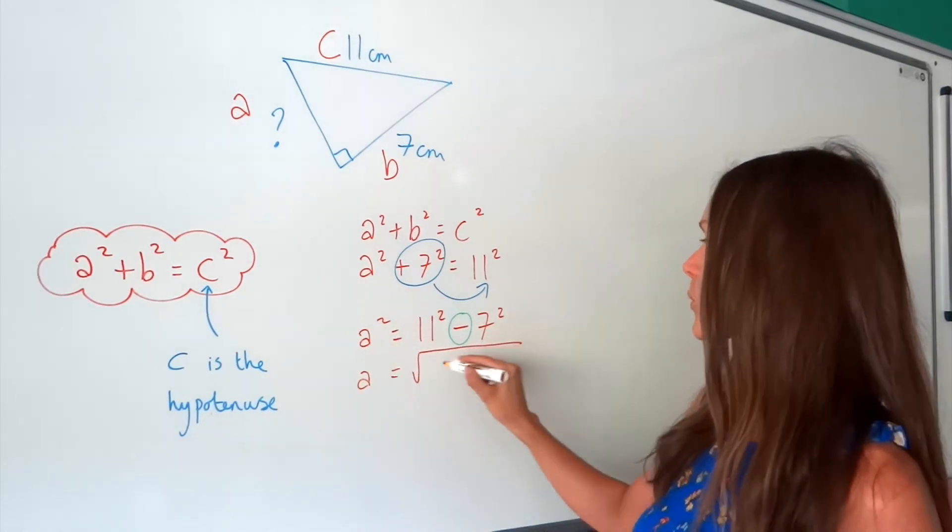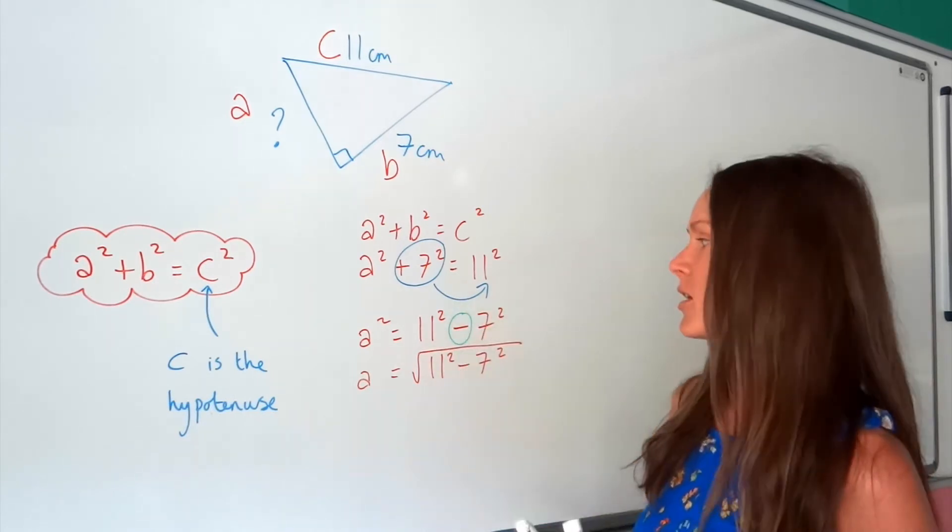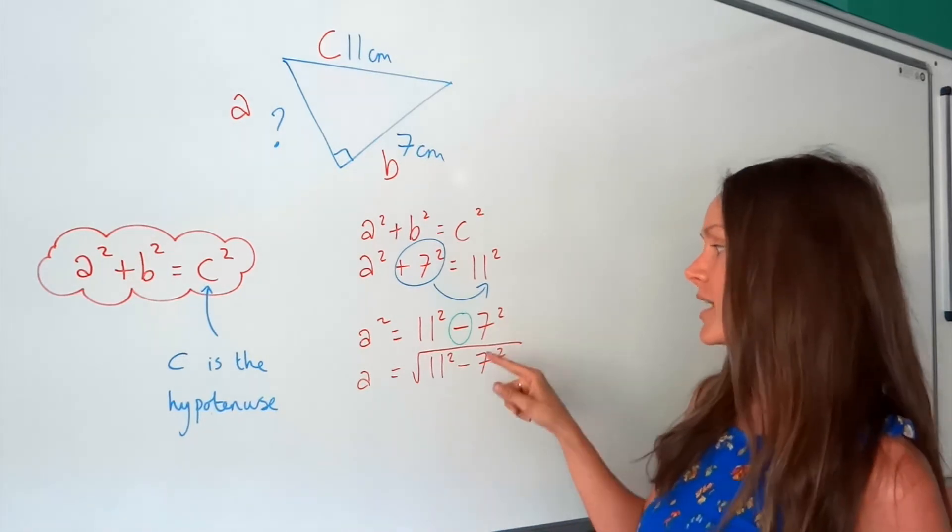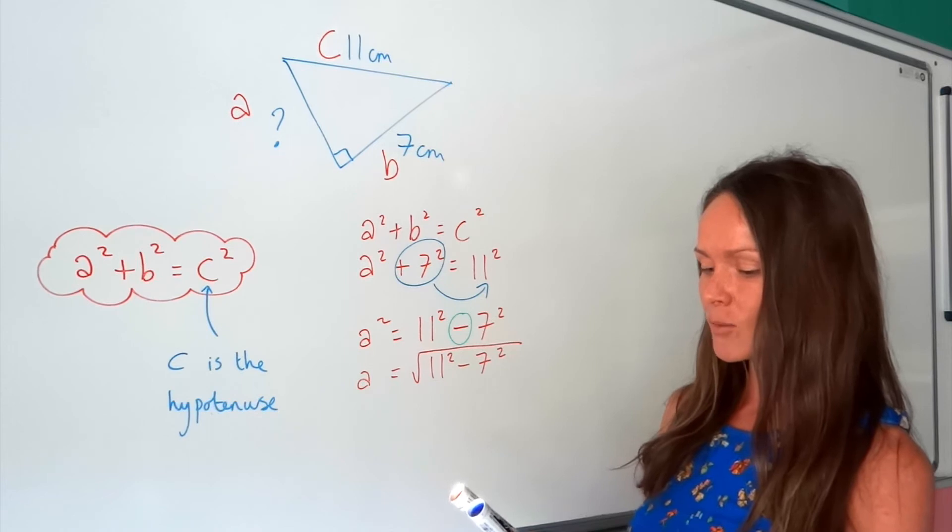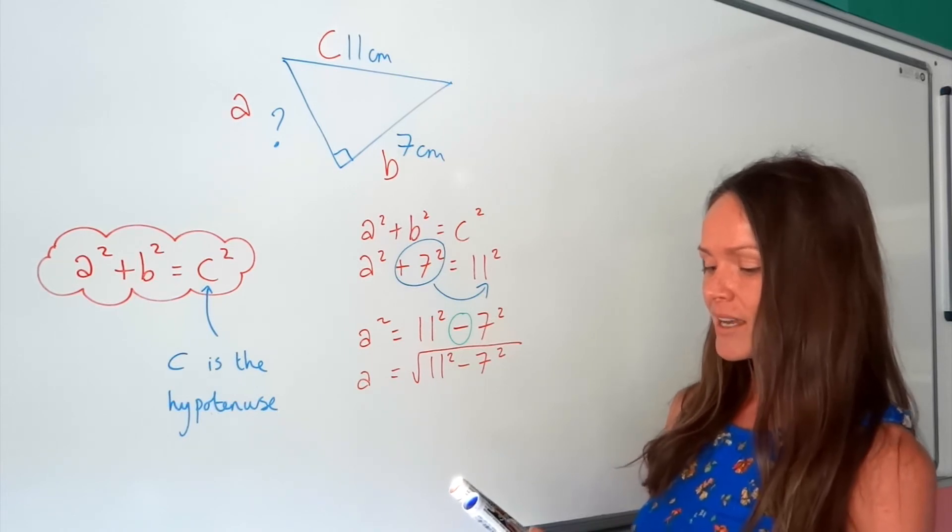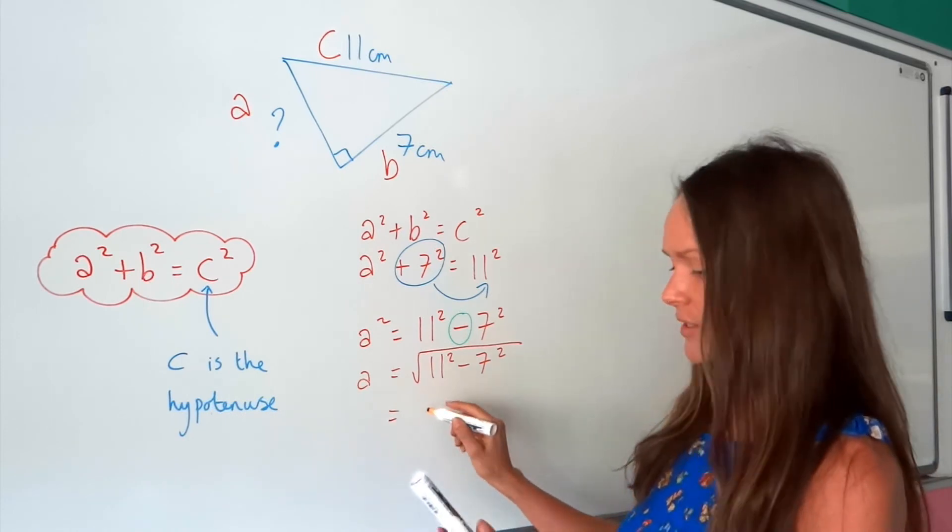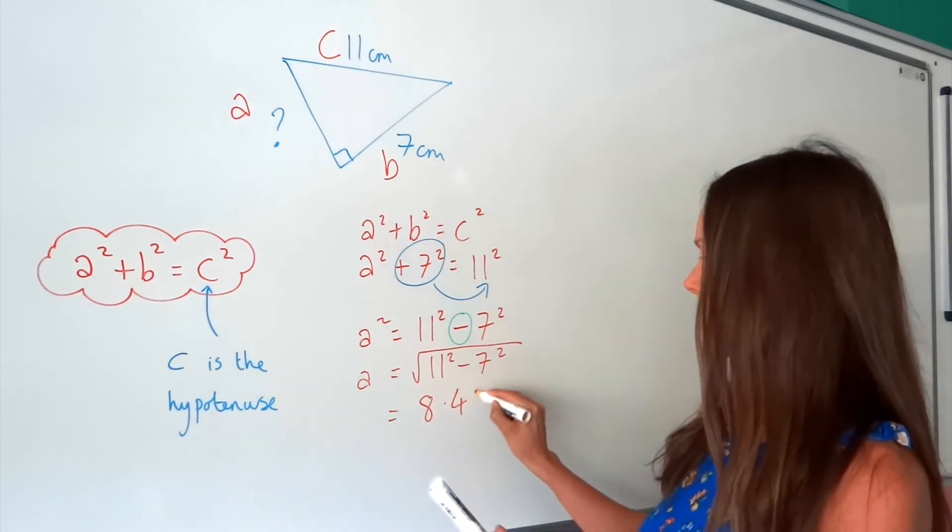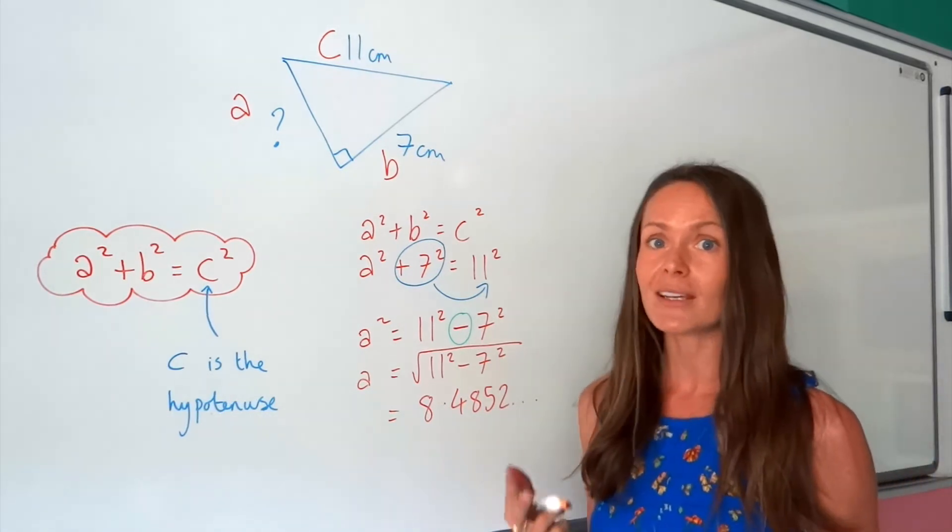Now, I know that this one's going to be a decimal answer, so I'm not going to try and do this in my head. I'm going to put this in the calculator. So the square root of 11 squared minus 7 squared gives me, I'm going to write out all the digits here. So I've got 8.4852 dot, dot, dot.